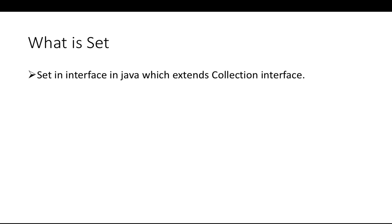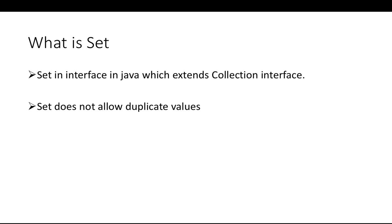Set is an interface which is part of collection, so it extends the collection interface. Whatever methods the collection interface has, you will get the same methods in Set as well, plus Set also has its own methods. The main difference between Set and List is Set does not allow duplicate values. In our previous video we inserted values and noticed duplicates, but Set does not allow duplicate values.